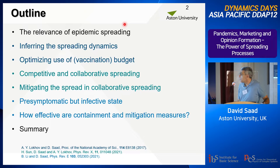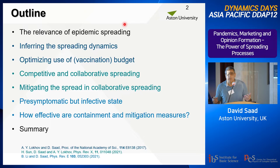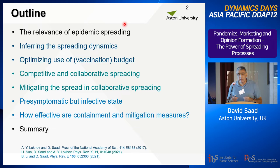A brief outline of my talk. I'll first motivate the study of epidemic spreadings, and given the last three years, I think this is going to be easy. I'll then talk about inferring specific states in spreading dynamics and optimizing the use of budget — budget can be vaccination, for instance, or information or marketing tools — how to best use them in order to optimize the final result.